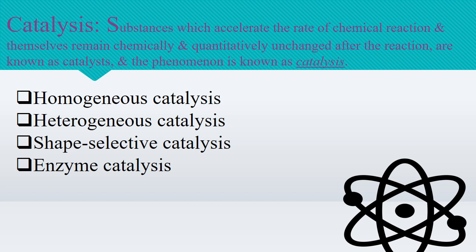Catalysis can be broadly divided into two groups: homogeneous catalysis and heterogeneous catalysis. Substances which accelerate the rate of a chemical reaction and themselves remain chemically and quantitatively unchanged after the reaction are known as catalysts, and the phenomenon is known as catalysis. We will also be seeing shape selective catalysis and enzyme catalysis.